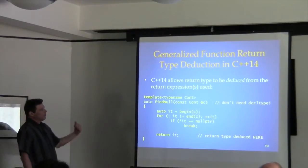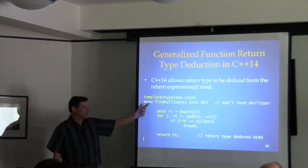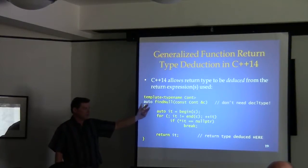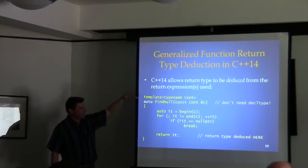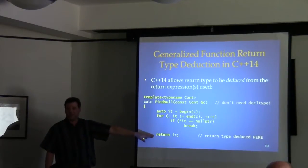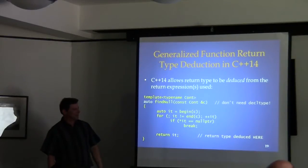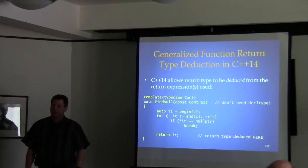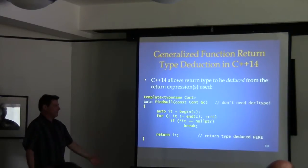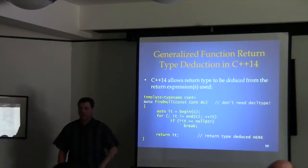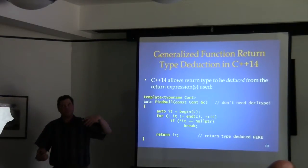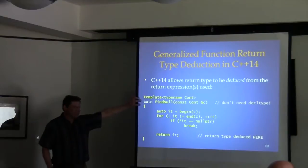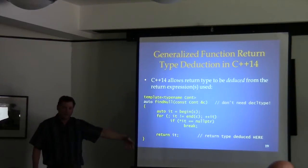In C++14, there's yet another use of auto: a function can be declared as returning auto with no trailing return type. The compiler figures out what the return type should be by looking at the return statement and fills it in. It's not 100% always applicable — if you have multiple return statements returning different types, it doesn't compile. The compiler won't guess which type you want to convert to which other one.